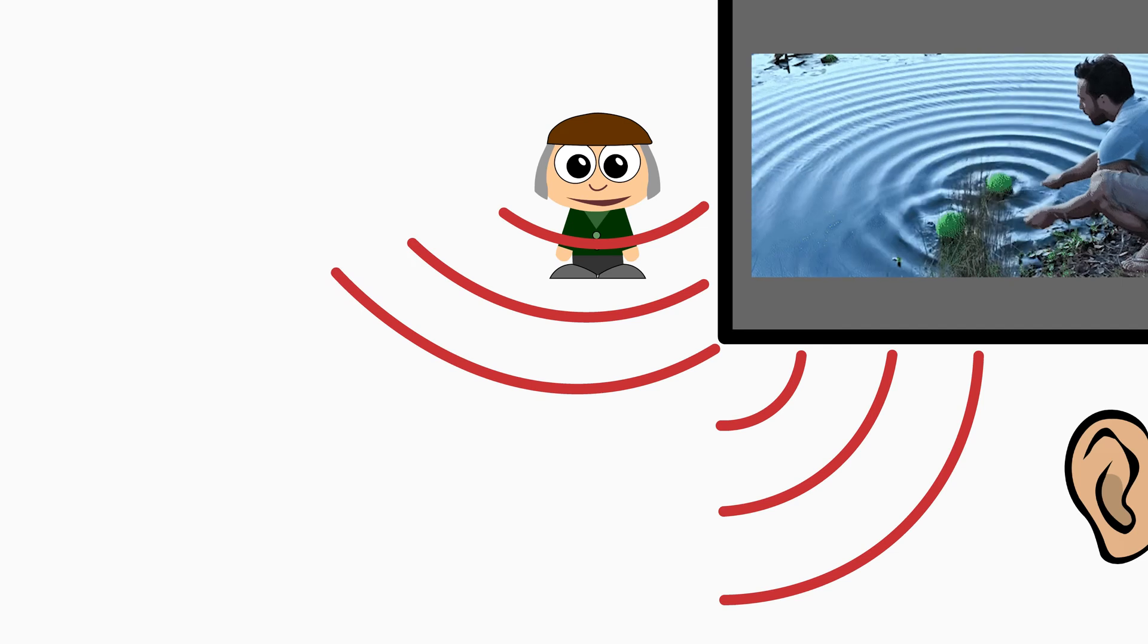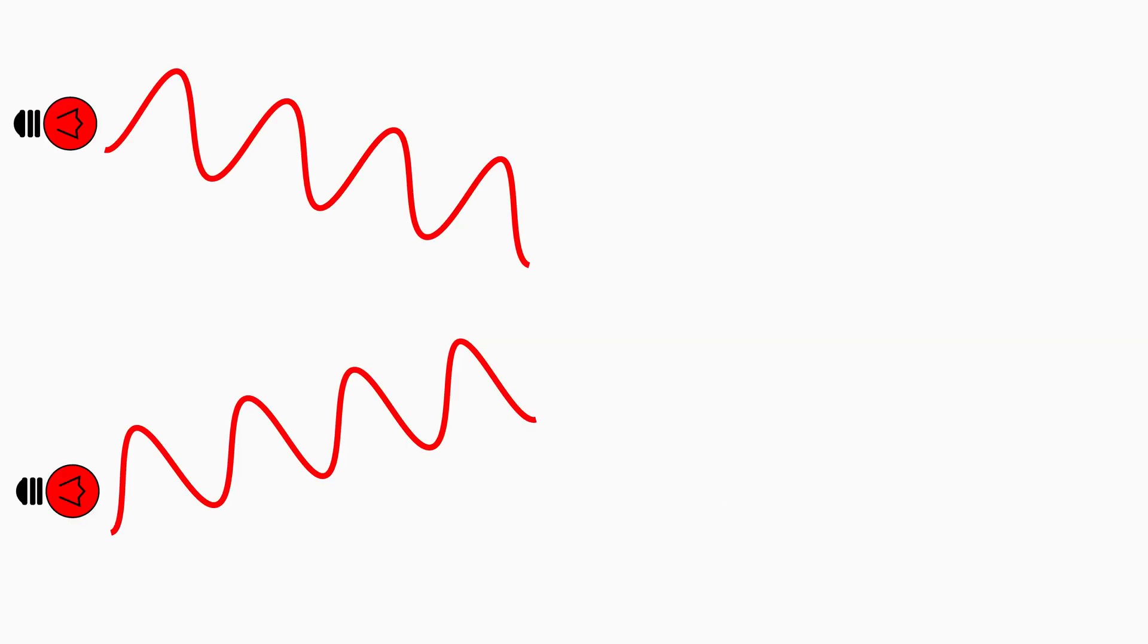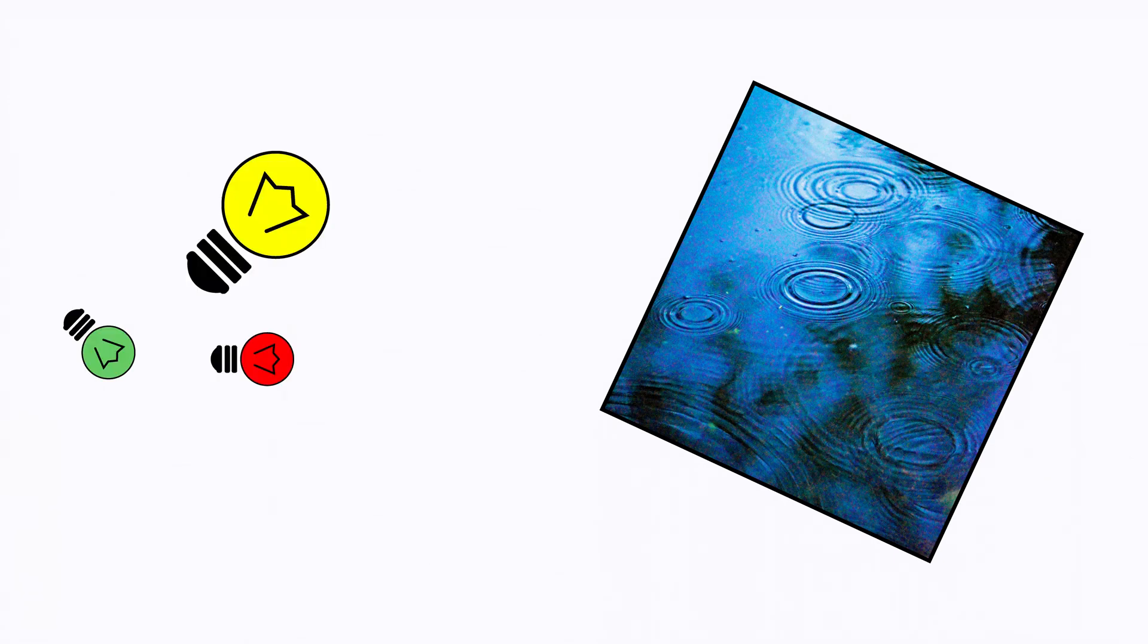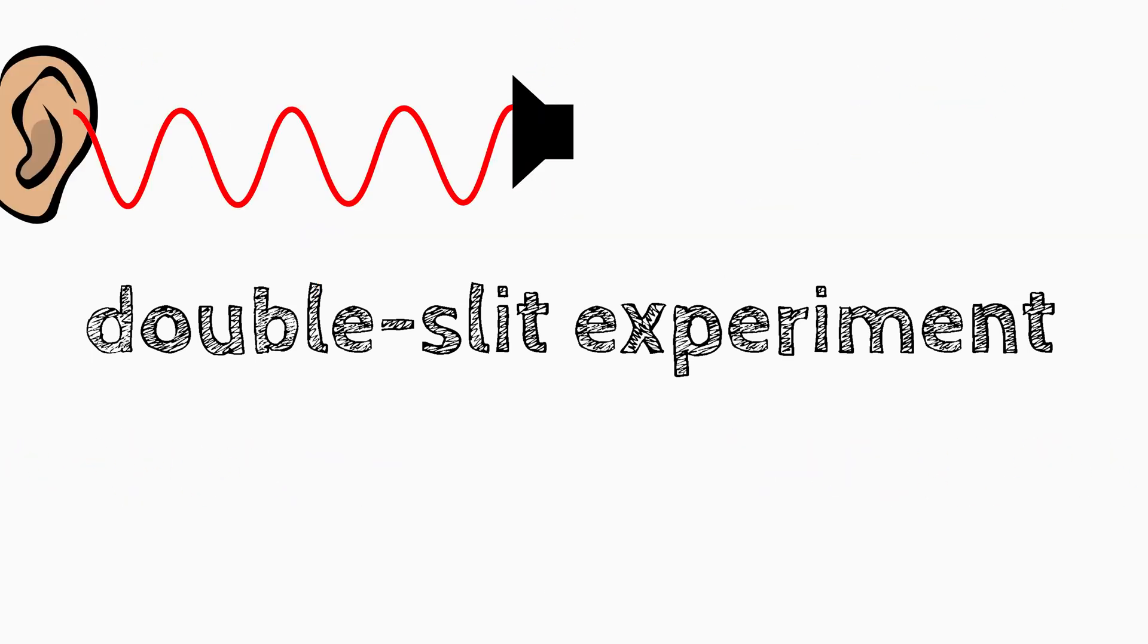But light should also show interference, like for example water waves. So if two light waves interfere constructively with each other, then the resulting wave should be brighter. It would be easy to think up such an experiment with water, but not with light, otherwise Newton would certainly have already tried it. The double slit experiment was born. Probably one of the most important experiments in physics, with which you can directly show that light has a wave character, as if it were like sound or water.